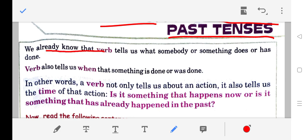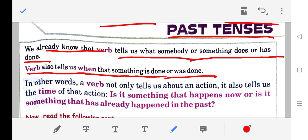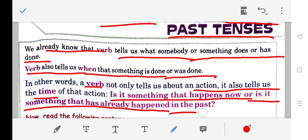We already know that verb tells us what somebody or something does or has done. Verb also tells us when that something is done or was done. In other words, a verb not only tells us about an action, it also tells us the time of the action. Is it something that happens now, or is it something that has already happened in the past?